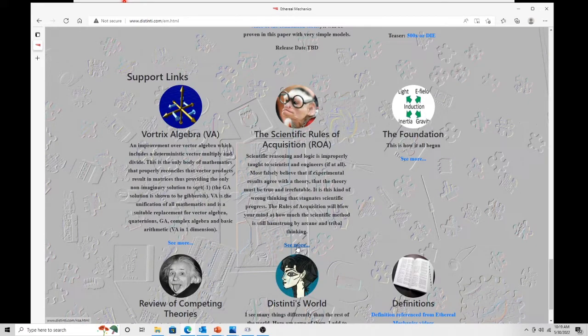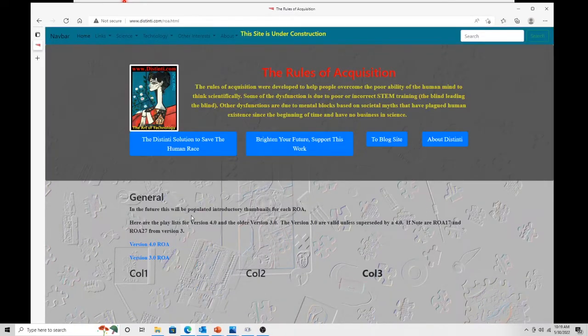Now sometimes these links on the top don't get you there. Sometimes they just bring you to the top of this page. If that happens, use the bottom link. Here's the scientific rules of acquisition, review of competing theories. Now for this guy here, let's go into the link.